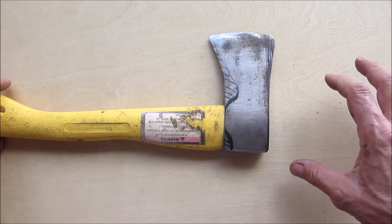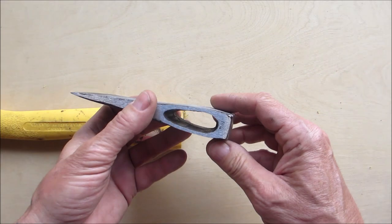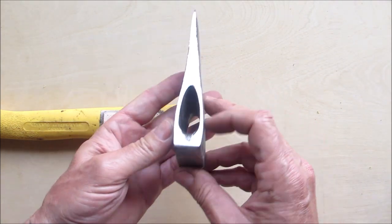First thing I did was remove the handle. It was just epoxied in, so I drilled it out and then just gave it a couple taps and it came out. Surprisingly straight eye.